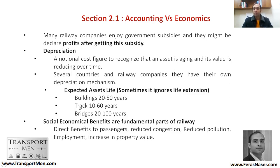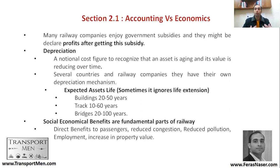Some expected asset lives: buildings 20 to 50 years, track up to 60 years, bridges 20 to 100 years. Once you have proper income statements, proper balance sheets, and proper asset valuation, you need to talk about social and economic benefits — a fundamental part of railways. What are the direct benefits to passengers? What are the benefits of reducing congestion, reducing pollution, employment, and increasing property values? This is fundamental, and you need to try to quantify it to present to any financier.